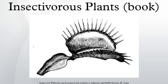Insectivorous Plants is a book by British naturalist and evolutionary theory pioneer Charles Darwin, first published on July 2, 1875 in London. Part of a series of works by Darwin related to his theory of natural selection, it includes illustrations by Darwin himself, along with drawings by his sons George and Francis Darwin.